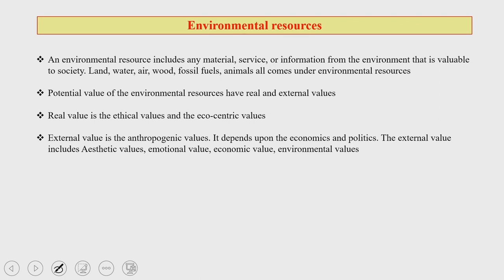The potential value of environmental resources has real and external values. Real value refers to ethical values and eco-centric values. Whereas the external value is the anthropogenic value — it depends upon economics and politics — and also includes aesthetic value, emotional value, economic value, and environmental values.